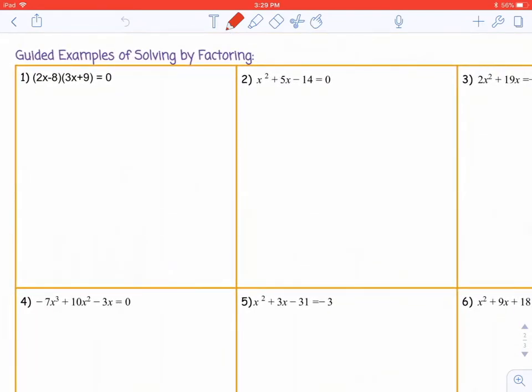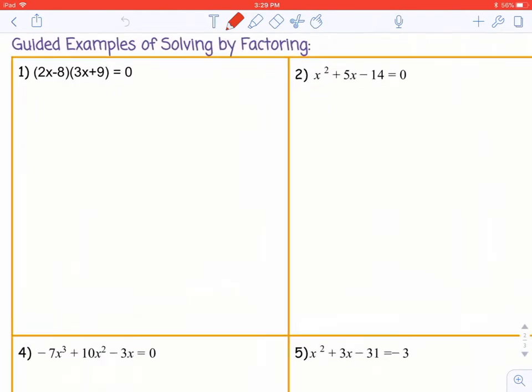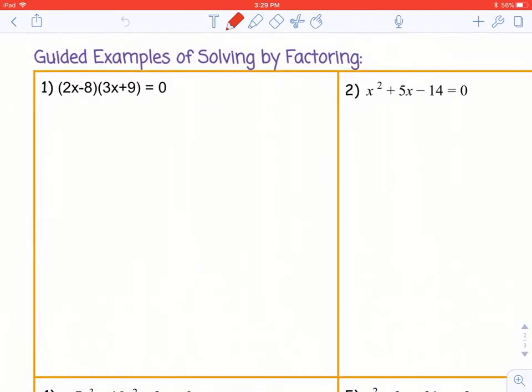Example 1 is already in factored form, so that makes it really easy to set up how to solve by factoring. You just want to take each factor and set them equal to 0. So 2x minus 8 will equal 0, and 3x plus 9 will equal 0. Then you want to solve each one of those equations to get your solutions.